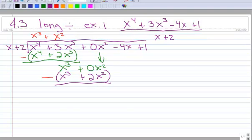Okay. x cubed minus x cubed. Those are gone. 0x squared minus 2x squared. Well, that's going to be a negative 2x squared. Now I bring down the next term. Minus 4x. And I start again.